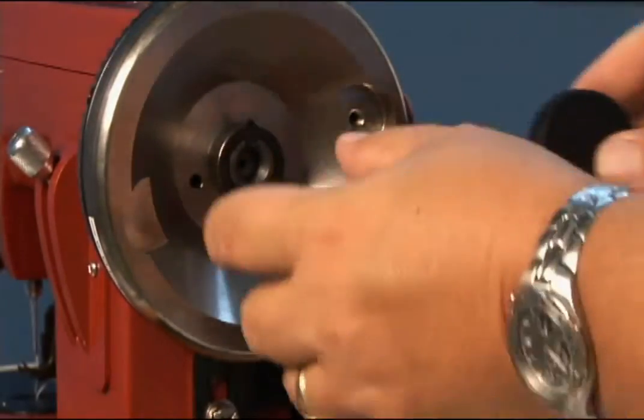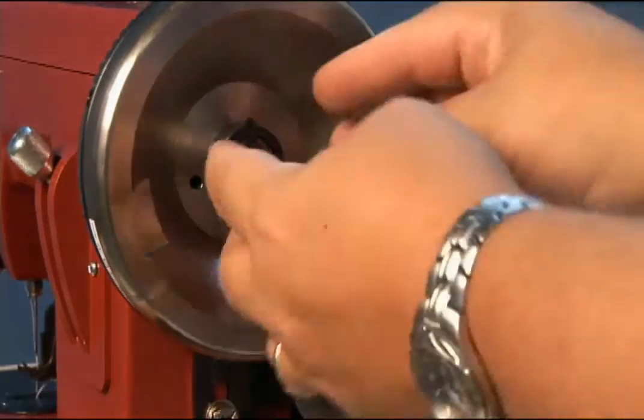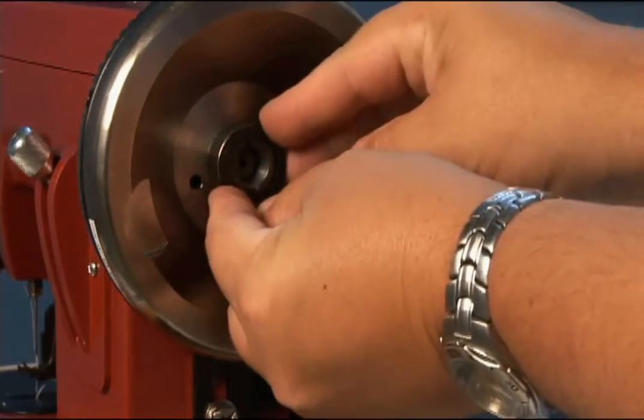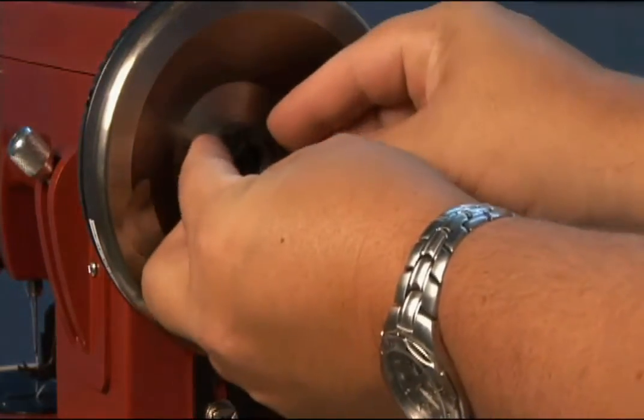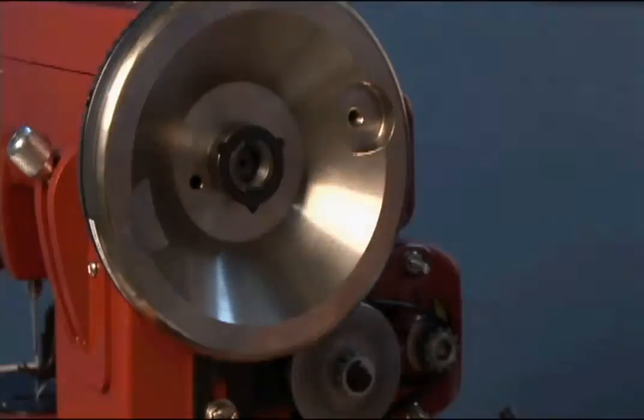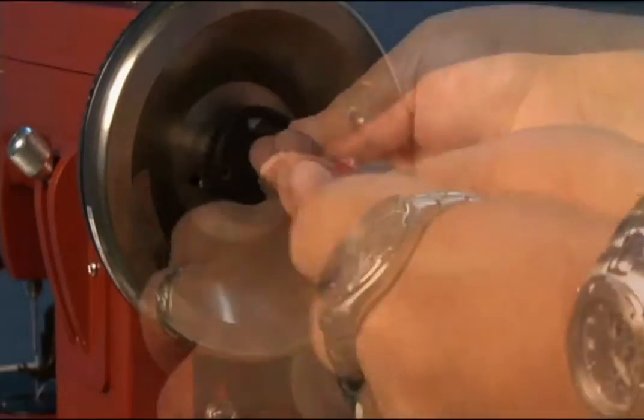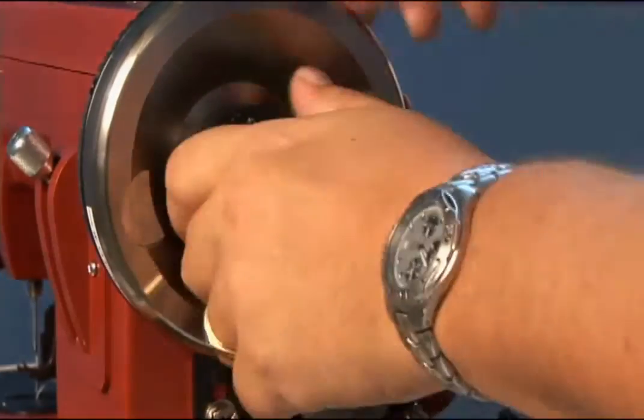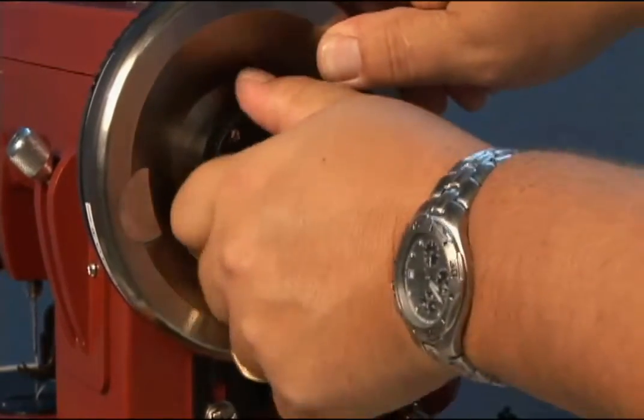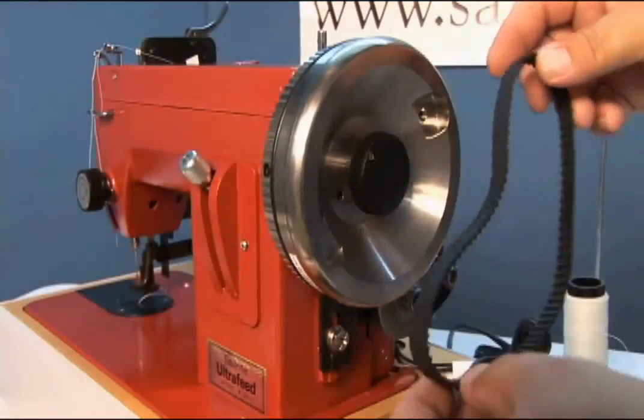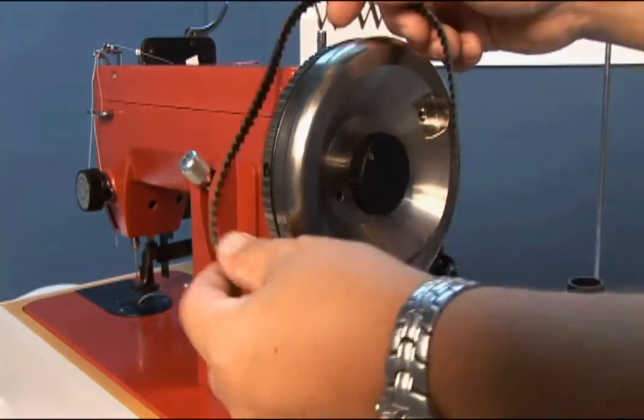So, take the screw out, take the clutch knob off, and then take this washer and rotate it 180 degrees. You'll notice the three fingers are now in different locations. Now we take that clutch knob, screw it on, being careful that it doesn't fall off, and then put the screw on. Look at that. Now it's loose enough that we can wind bobbins and tight enough that we can lock that baby down hard.